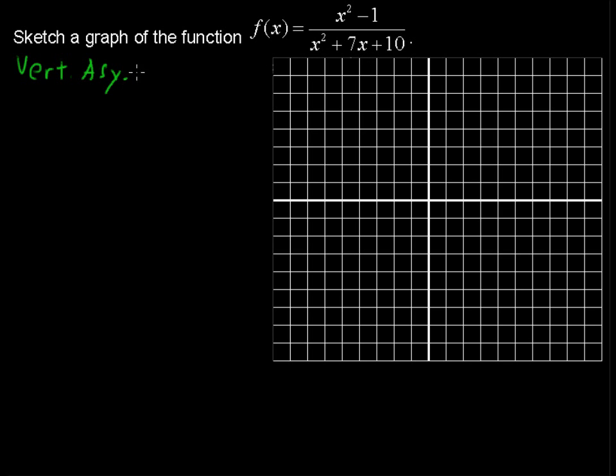We cannot let that denominator equal 0 because when the denominator equals 0 the function is undefined. So I'll set up this equation and we're going to factor x squared plus 7x plus 10 equals 0, which is factored as (x + 2)(x + 5) equals 0.